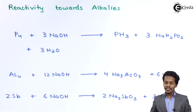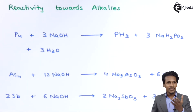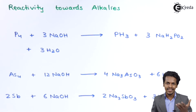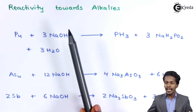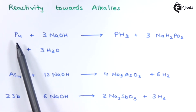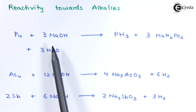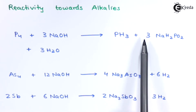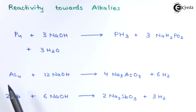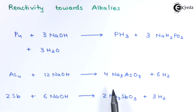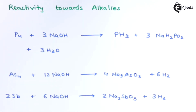The next reaction is the reaction of group 15 elements with alkalis. Phosphorus reacts with 3 moles of NaOH to produce phosphine (PH3) and 3 moles of NaH2PO2. Arsenic reacts with sodium hydroxide to produce 4 moles of Na3AsO3 (sodium arsenite) along with 6 moles of H2. Antimony reacted with 6 moles of NaOH gives Na3SbO3 (sodium antimonate) along with 3 moles of H2. This was the reaction of group 15 elements with alkalis.